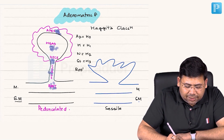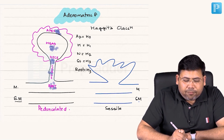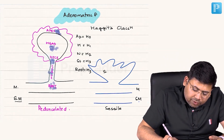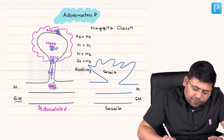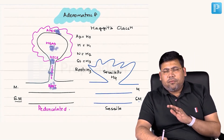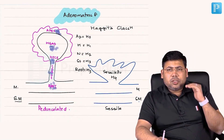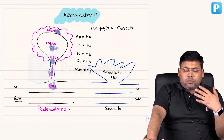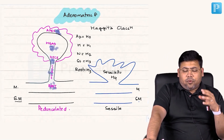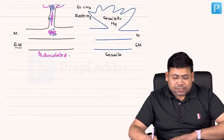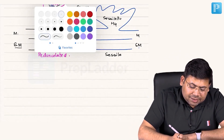Remember, by default all sessile polyps are classified as H4. So H0, H1, H2, H3, H4 are all very important. When you go for colonoscopy, you see the polyp, excise it, and assess where the tumor is located on the polyp — this is very important.